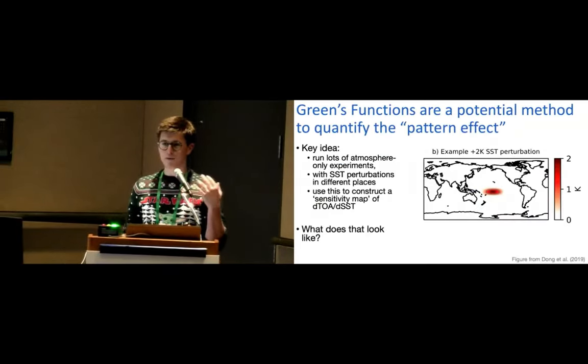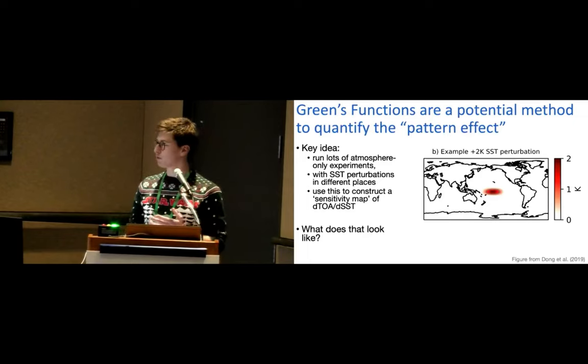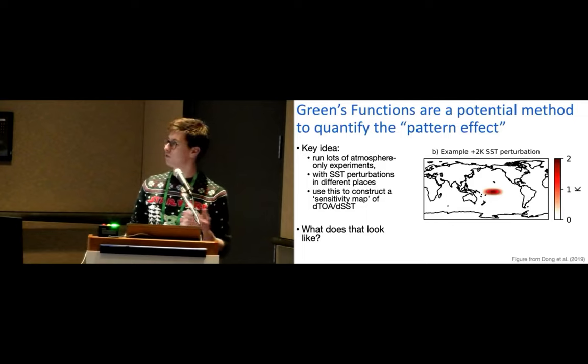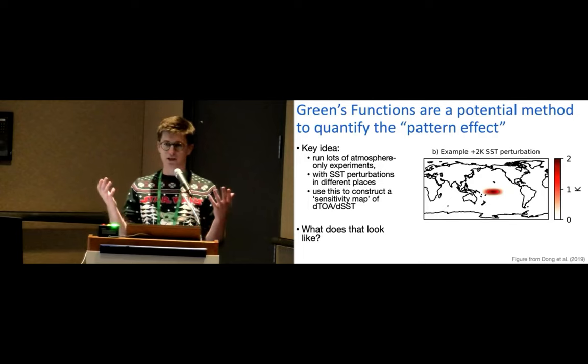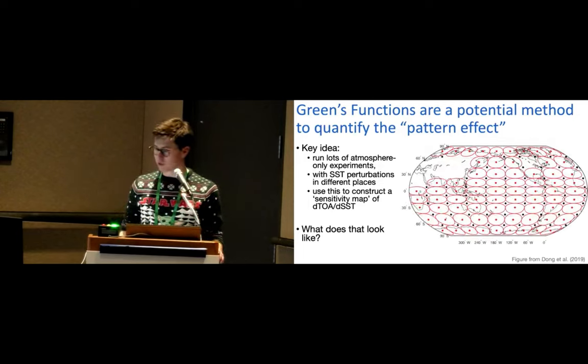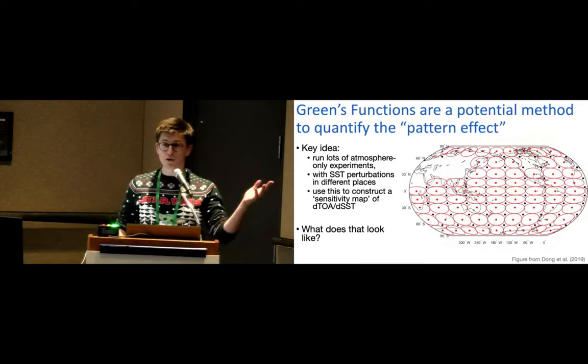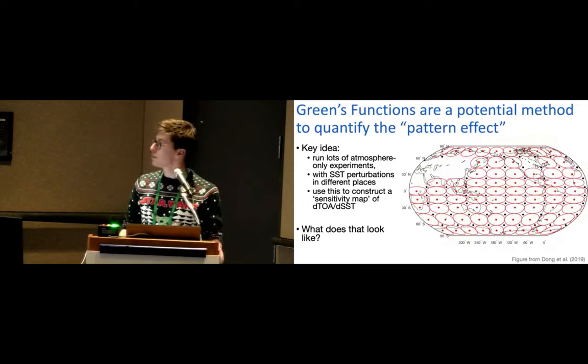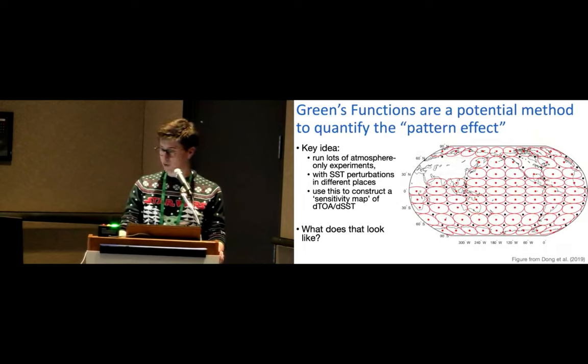And now we want to be a little bit more quantitative with this and not just have pretty pictures. So one way that people have gone about tackling that is through the use of what are called greens functions. So the idea here is, you know, you can take these warming patches and run them in an atmosphere-only model. And rather than just running them in one location, you can run them in hundreds of locations. This is a nice schematic from Yue's paper where they took an atmosphere-only model, forced with climatological SSTs and sea ice.